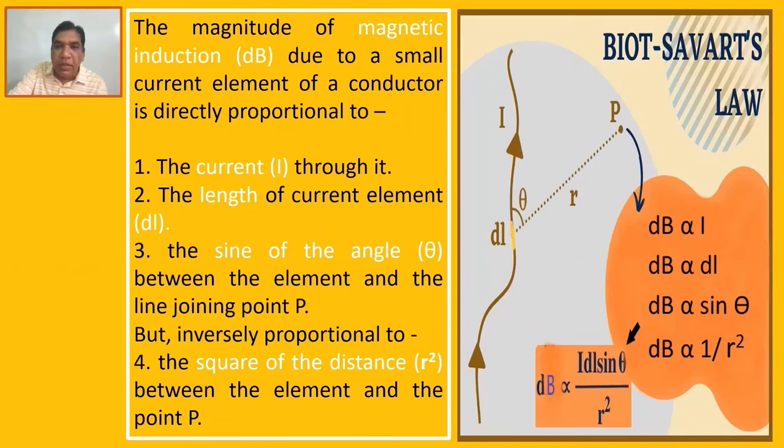Combining all these points, we can write: dB proportional to I, dB proportional to dl, dB proportional to sin θ, and dB proportional to 1 over R squared. So combining all these, we get dB proportional to I dl sin θ over R squared.